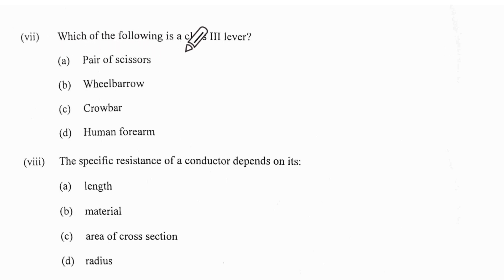Seventh one: which of these is a class 3 lever? Pair of scissors is class 1, wheelbarrow is class 2, human forearm is the correct answer. This is a direct question from the textbook.